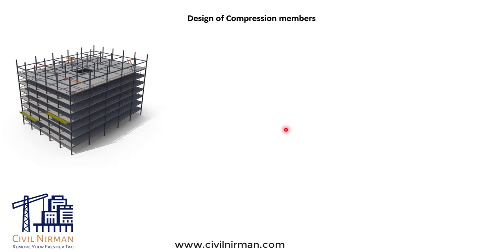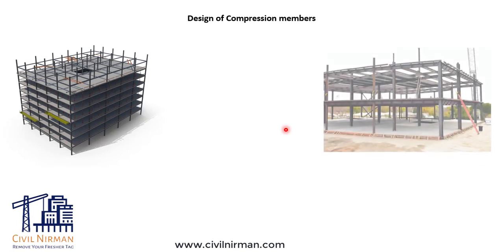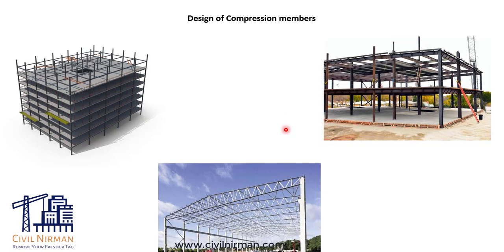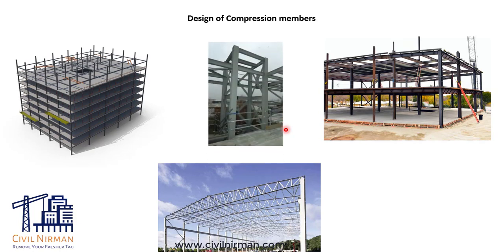Compression members are commonly used as columns in building structures, cords or webs in trusses, or braces in a frame structure. The maximum strength of a steel compression member depends to a large extent on the member length and its end support conditions.